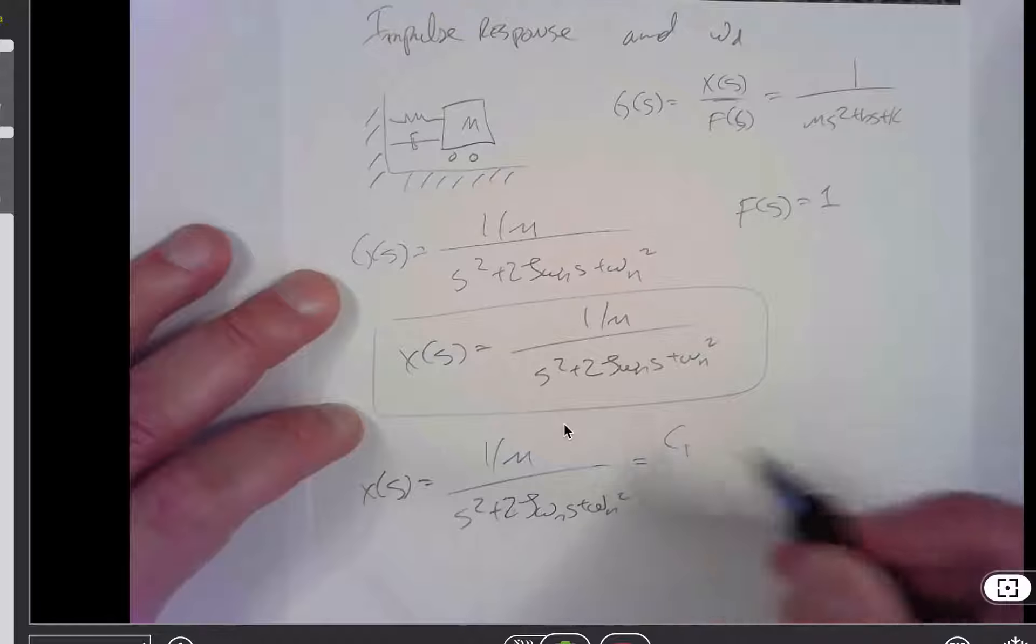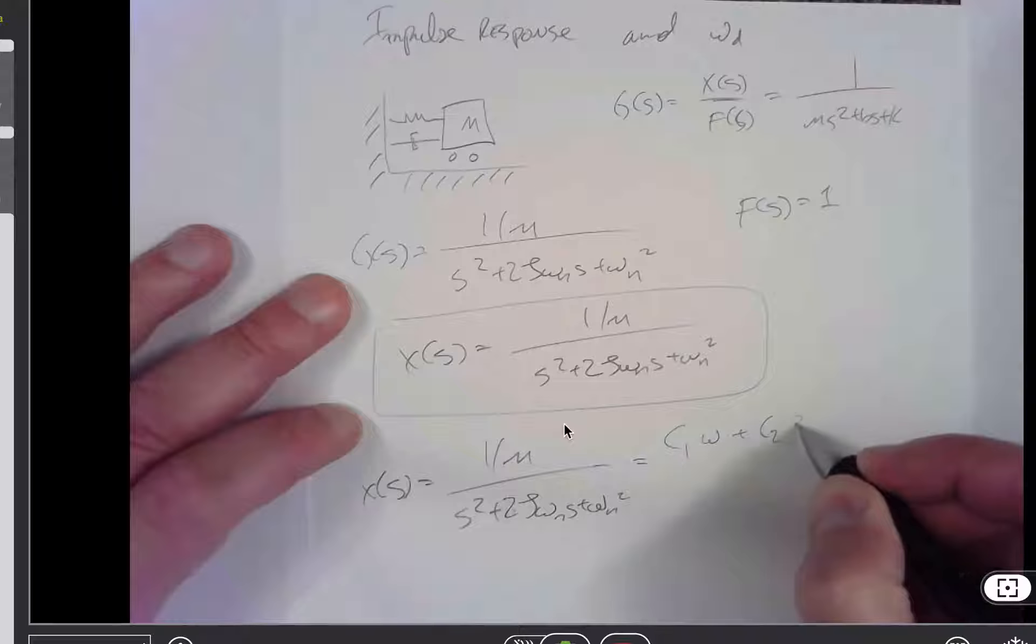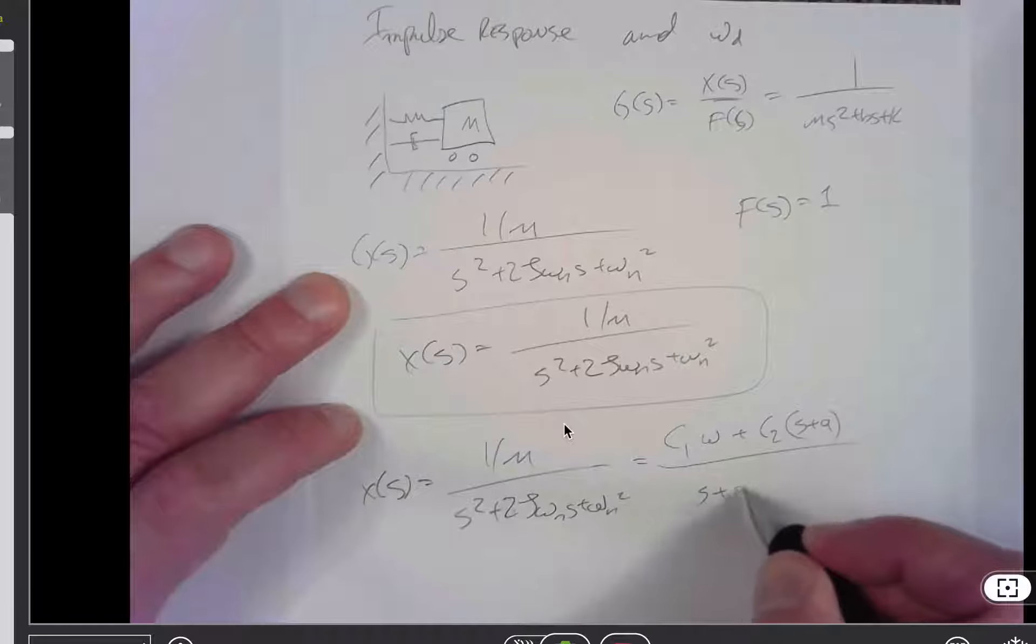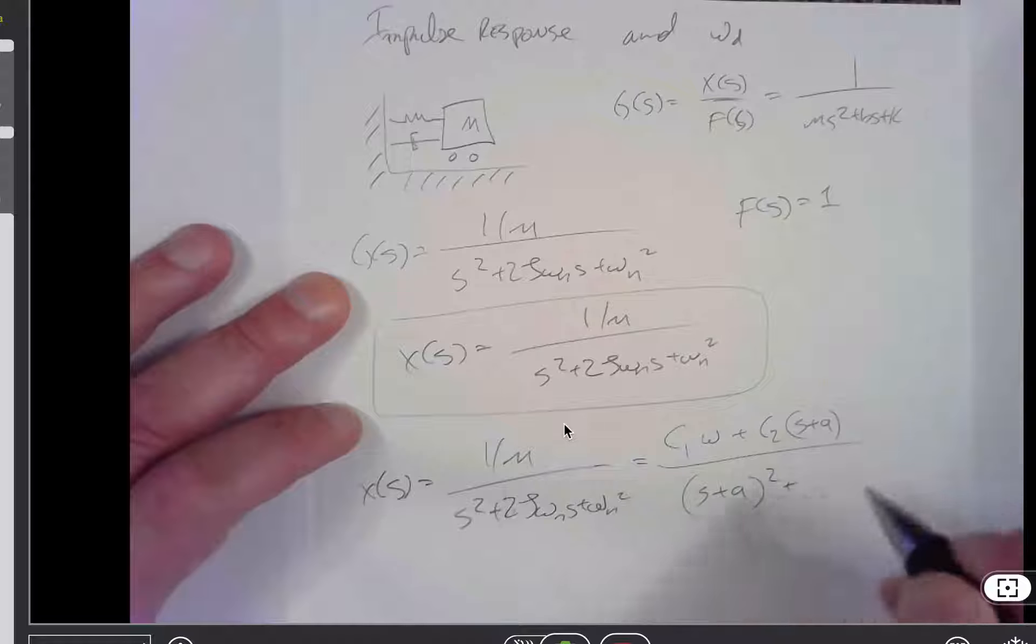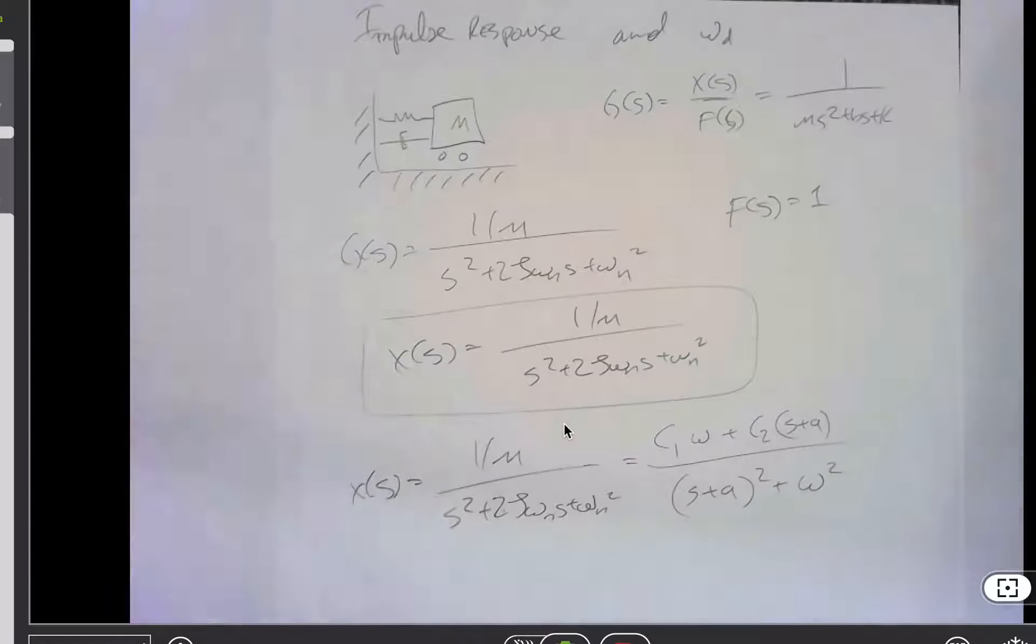And we want to write that as c1 times the sine plus c2 times the cosine, so it's going to have this decaying sine wave form in the denominator. So if that's going to be true.